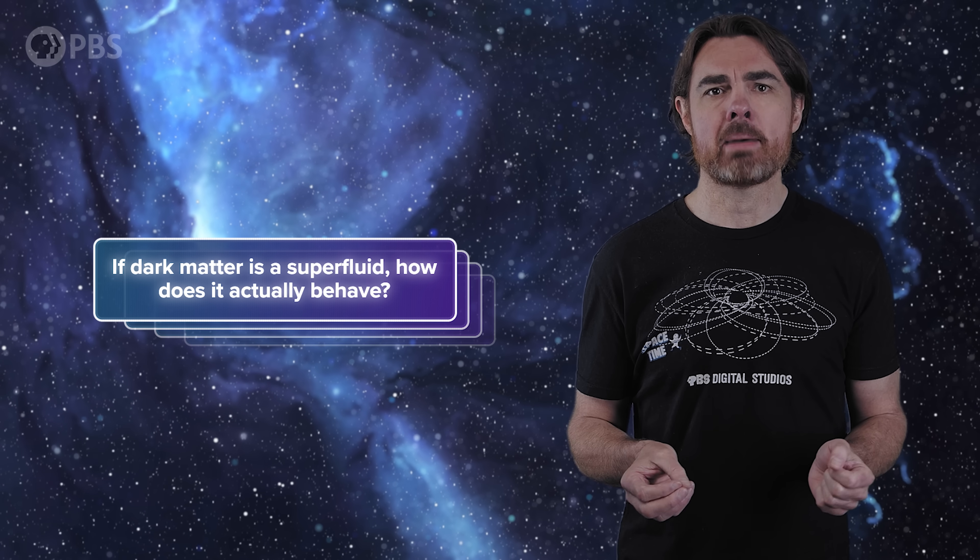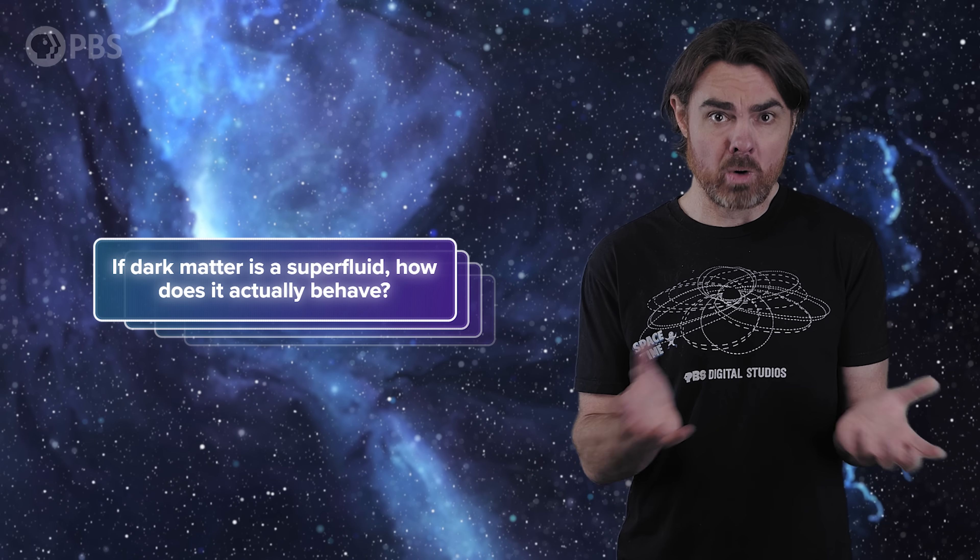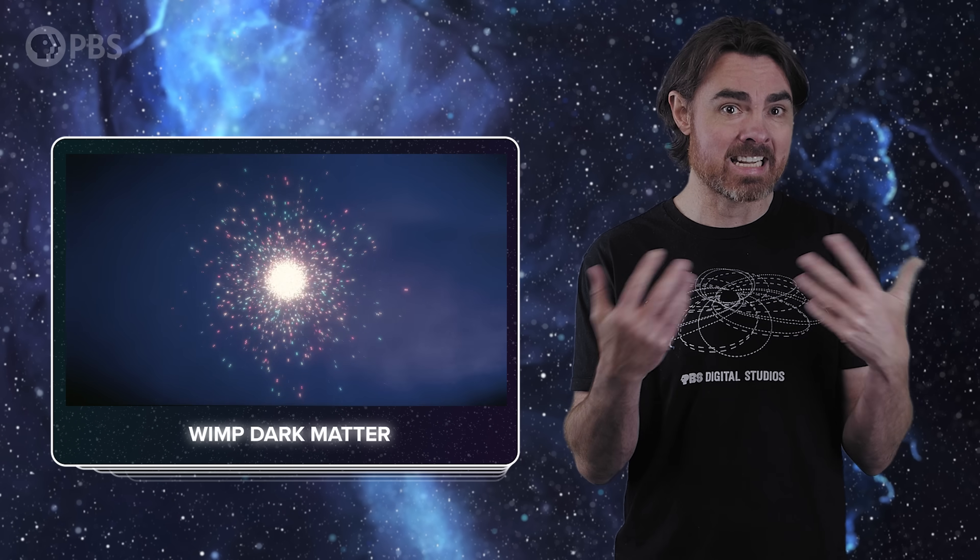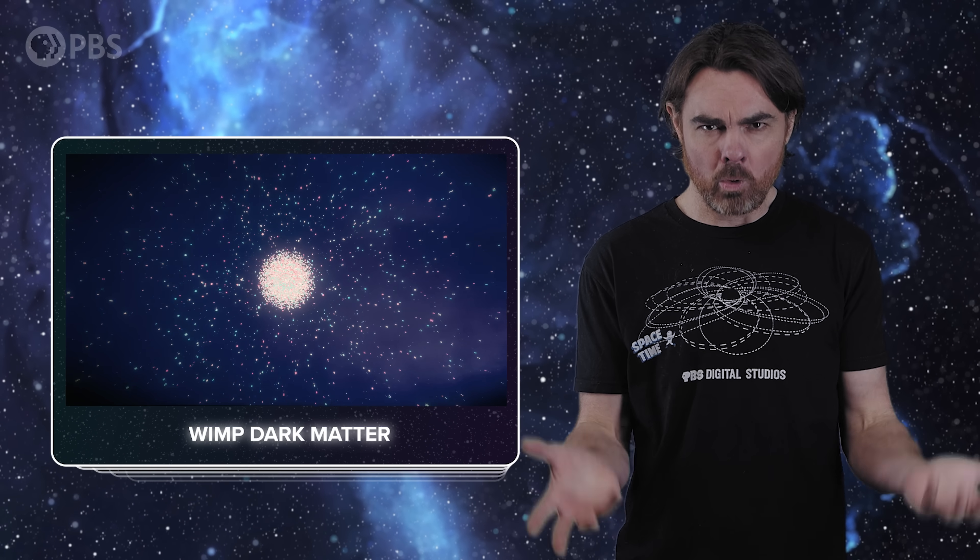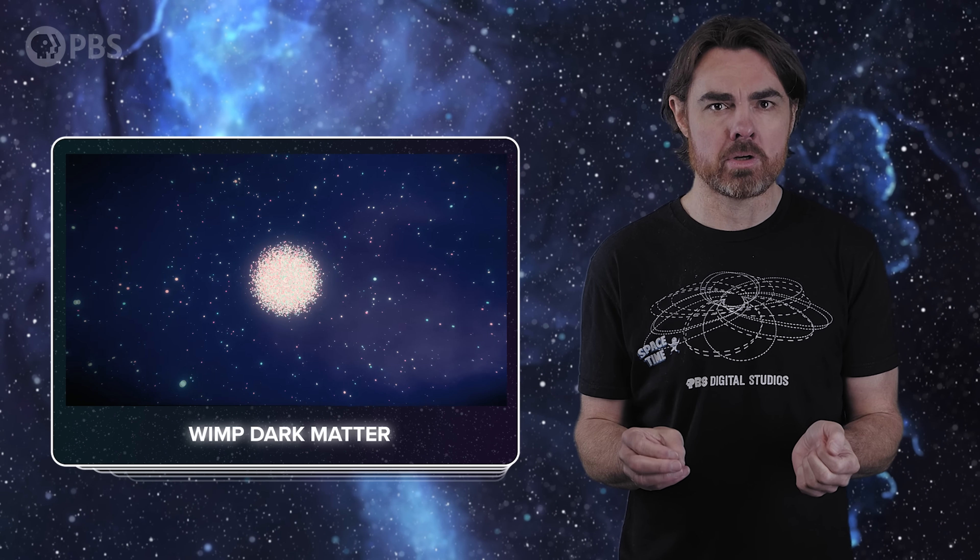But if dark matter is a superfluid, how does it actually behave? Remember that modeling dark matter as regular particles works pretty well. This new type of dark matter would need to do at least as good a job as WIMPs for us to consider them as a valid alternative. But this type of dark matter would behave very differently to a WIMP. For example, the picture I painted earlier of WIMPs falling towards the center and ending up in random orbits doesn't work for the axion superfluid.